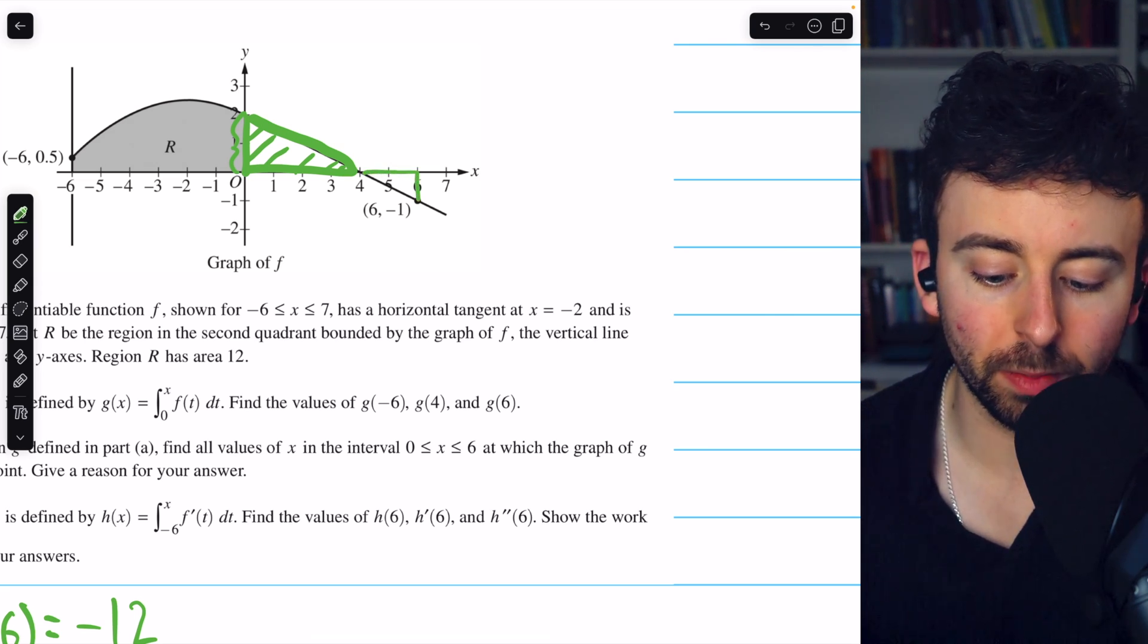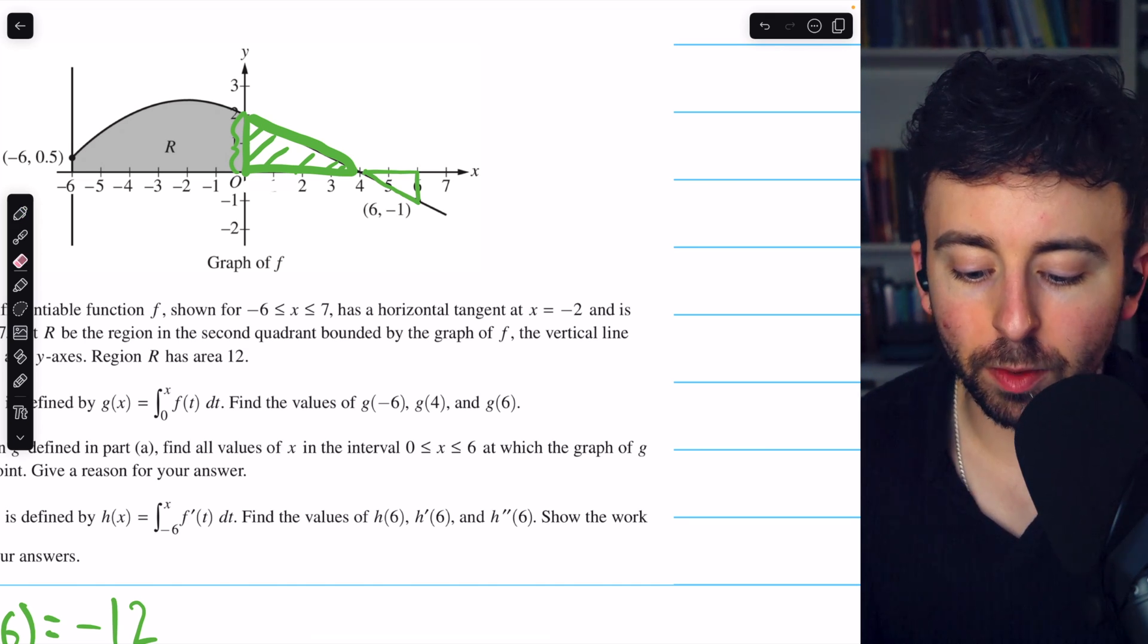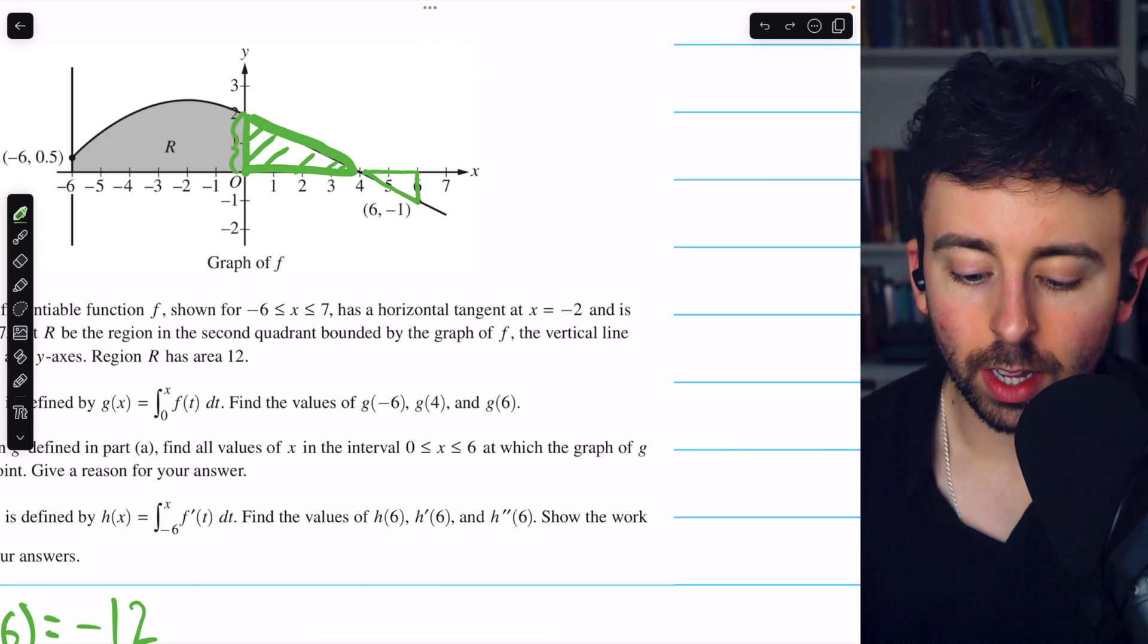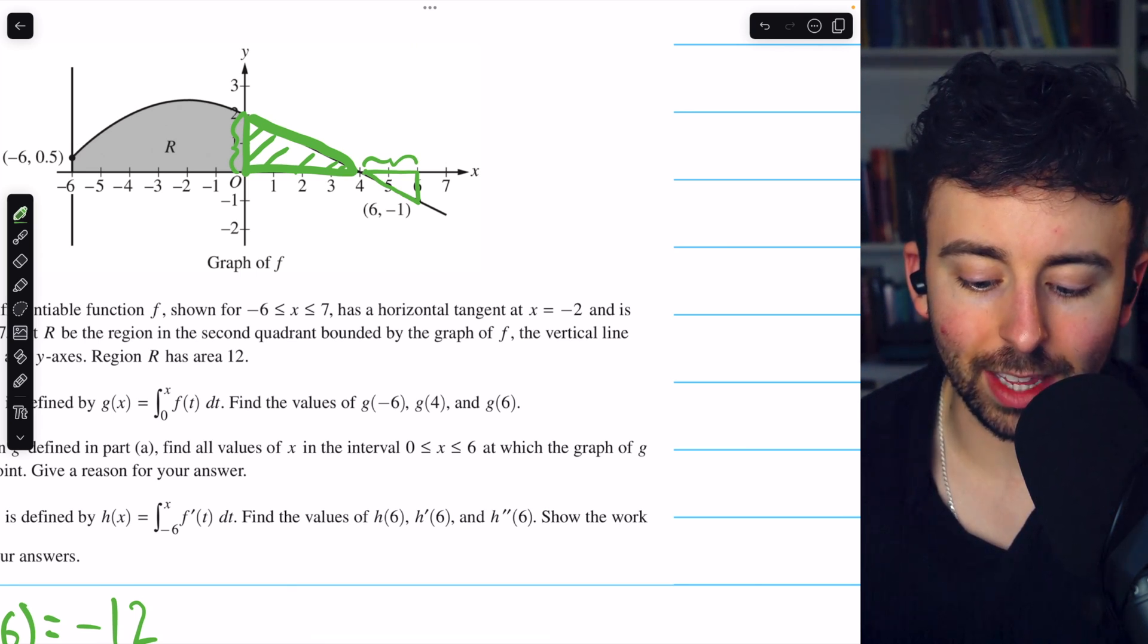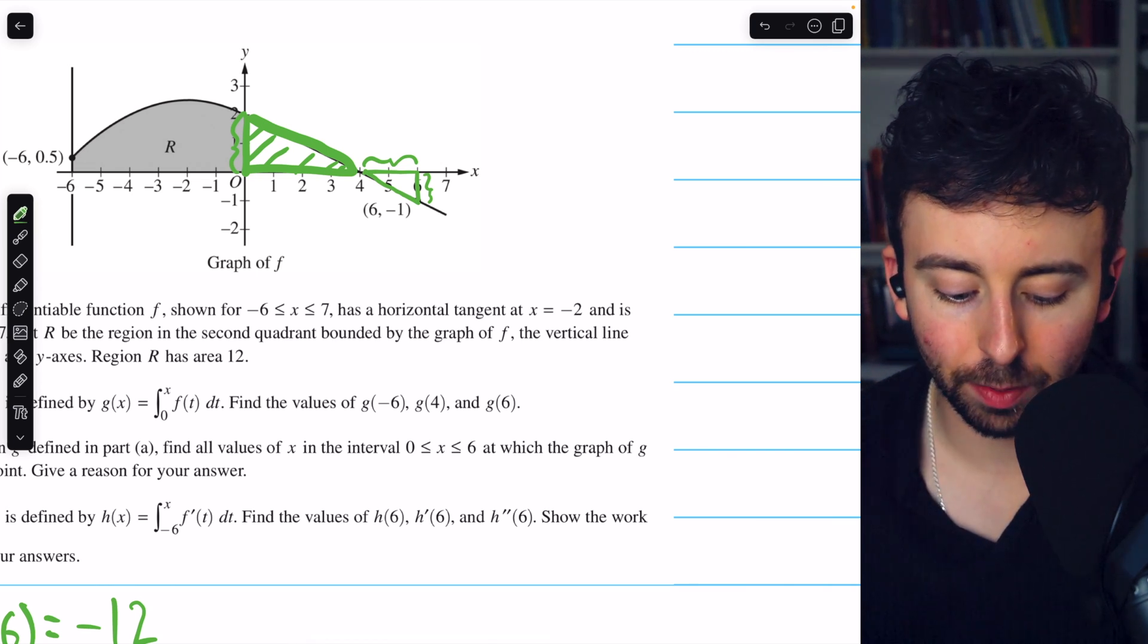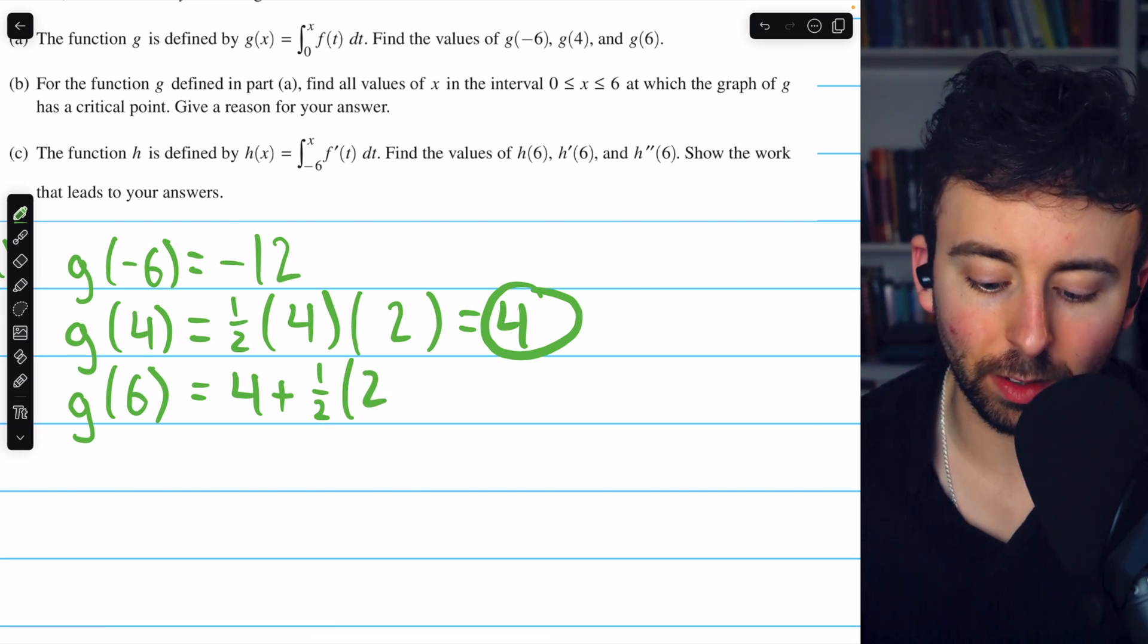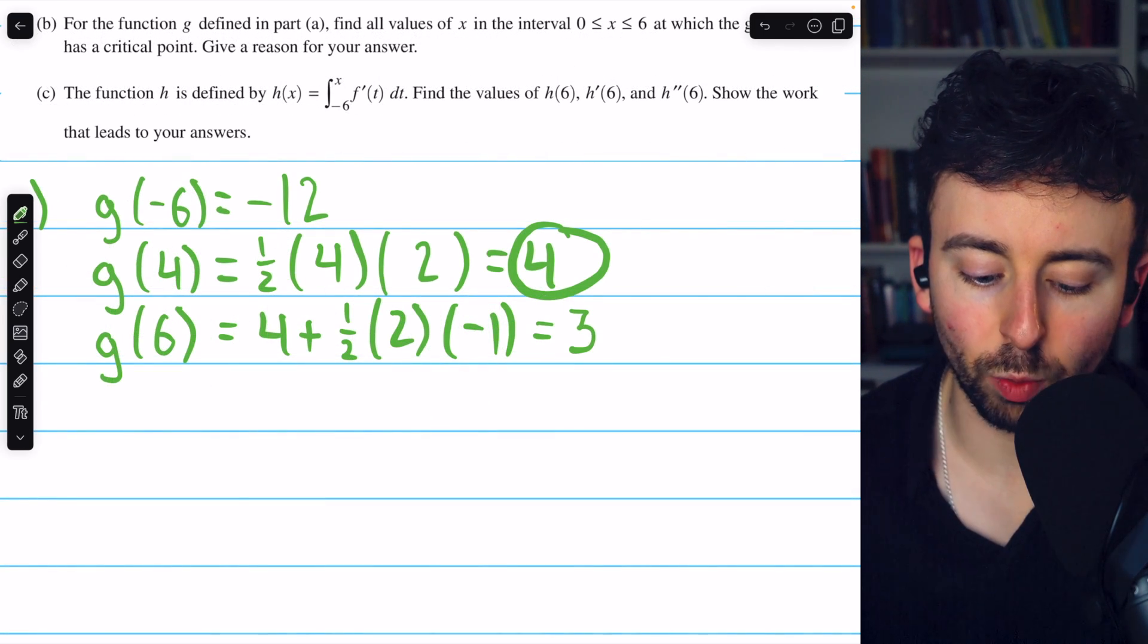But again, this is just a triangle. So again, we will use 1 half base times height. And again, we're taking all the area from 0 to 6. We already did the area from 0 to 4. So now we're just going to add the area from 4 to 6. The base of this triangle is 2, from 4 to 6. And the height we see is negative 1, which is why the area will be negative. So this is going to be 4 plus, excuse me, 1 half times the base of 2 times the height of negative 1. So this is 4 minus 1, which is 3. That is g of 6.